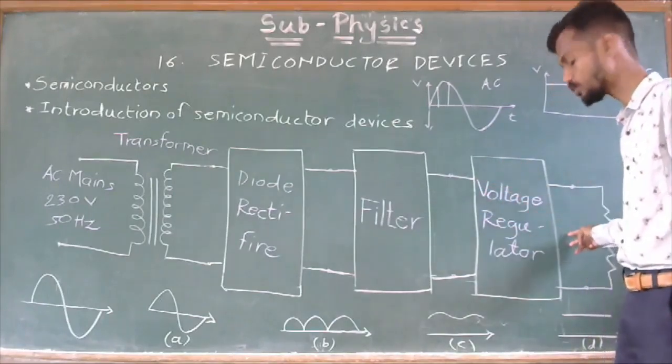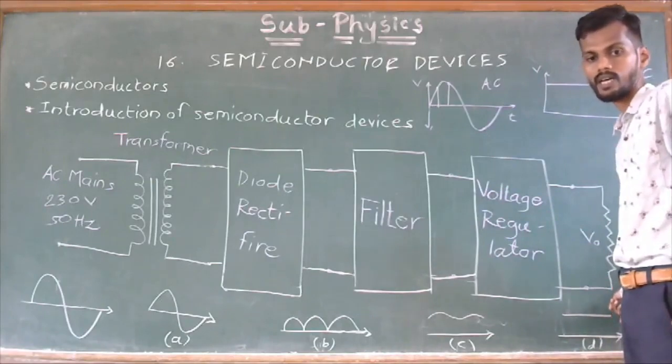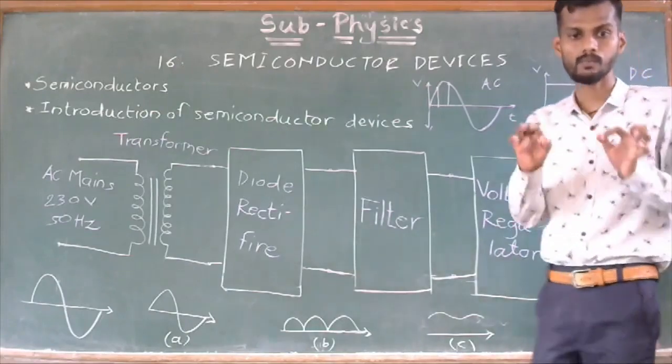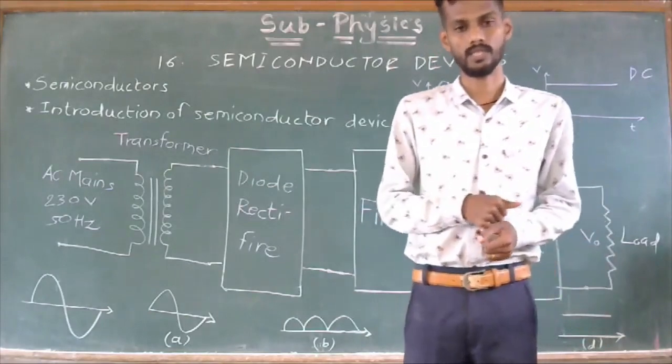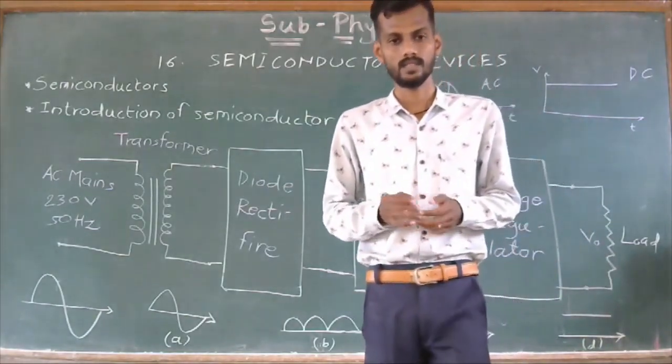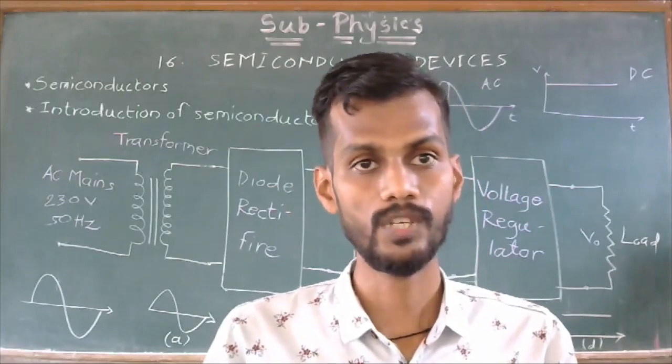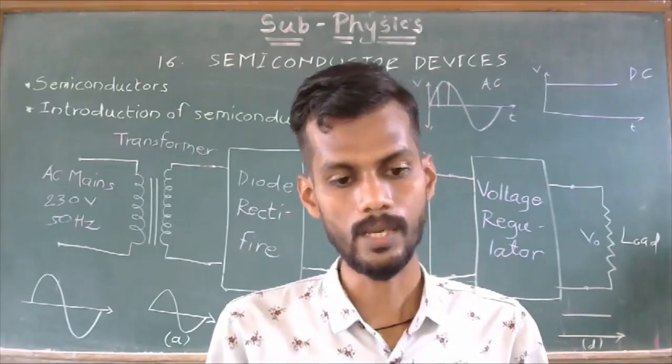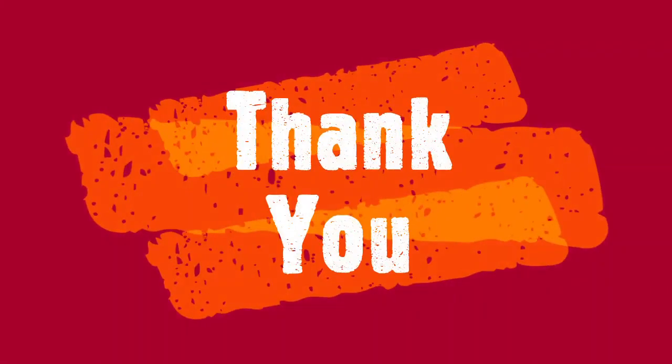And, at output of voltage regulator, we will get a pure DC voltage. This is a simple block diagram showing how the AC voltage is converted into DC voltage. That's it. So, in next lecture, we will study briefly about rectifier, types of rectifiers. Let's stop here. Thank you. To be continued.